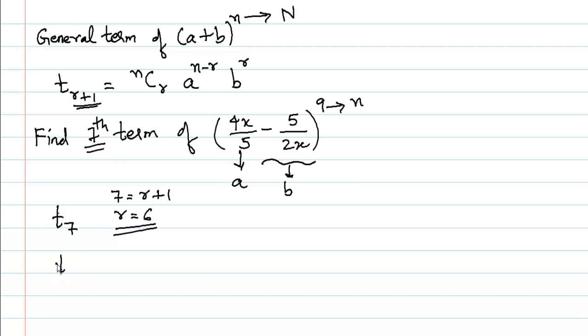So we will rewrite the formula: t_{r+1} = nCr × a^(n-r) × b^r. So we have r = 6, which gives us 6+1 = 7, and we will end up with the 7th term.